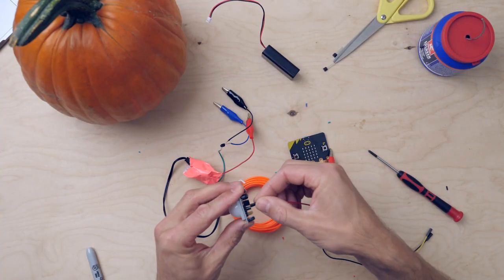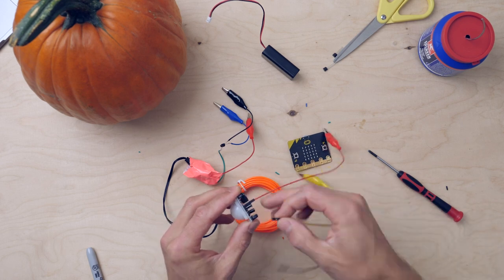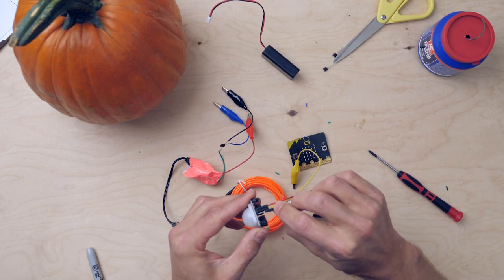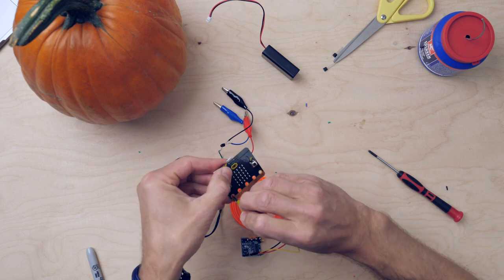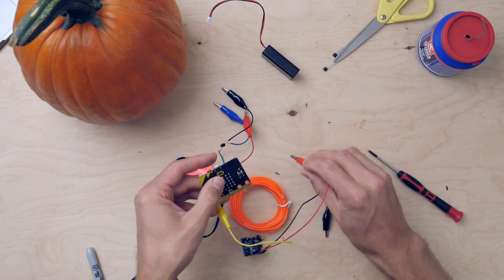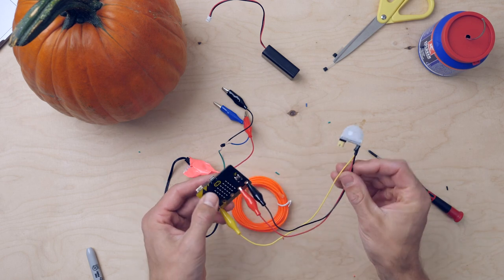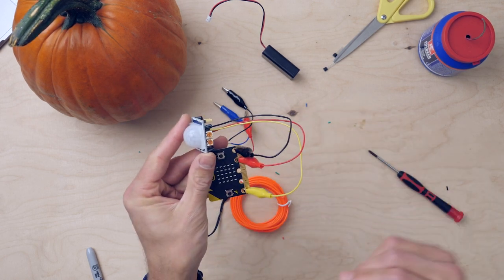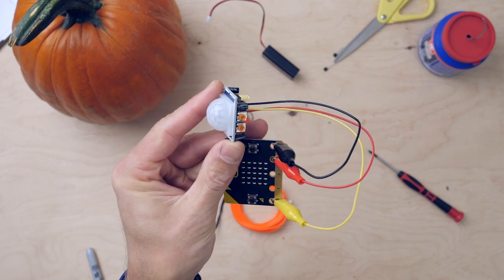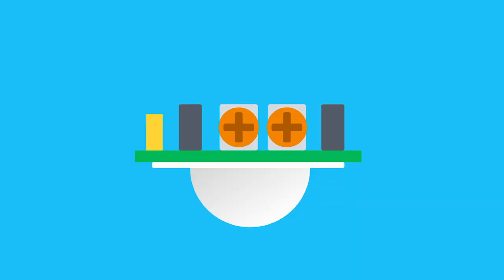Connect the three jumpers to the PIR sensor. On the sensor, there are two orange buttons. One is for the delay, and the other one is for the sensitivity of the sensor.